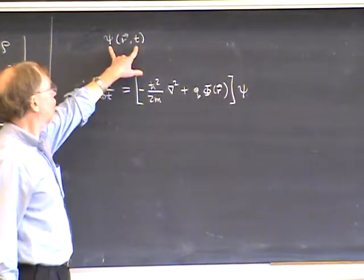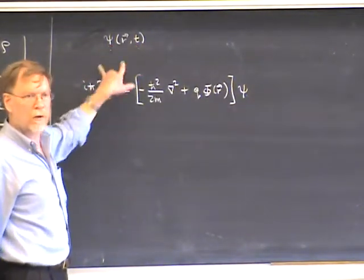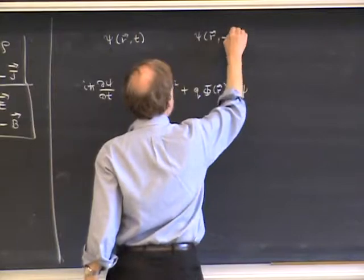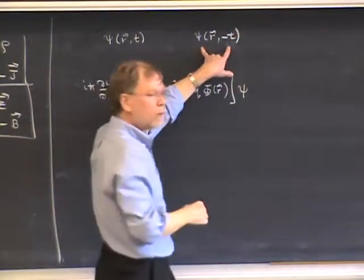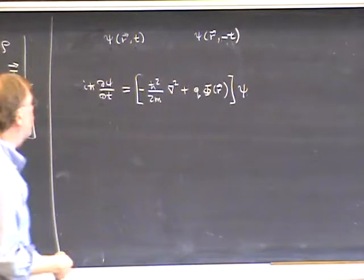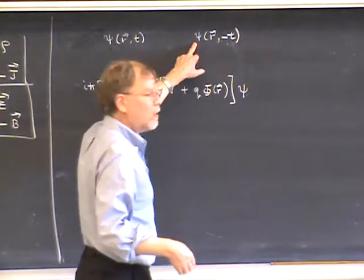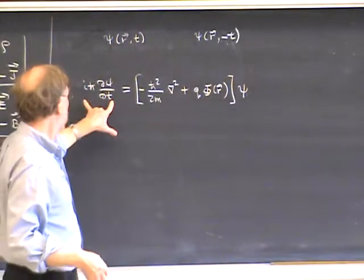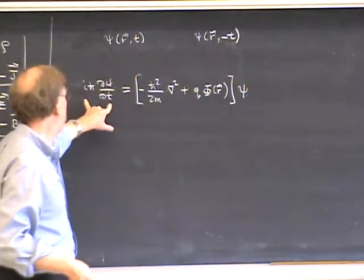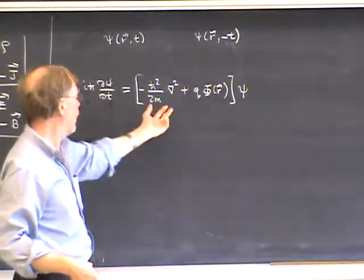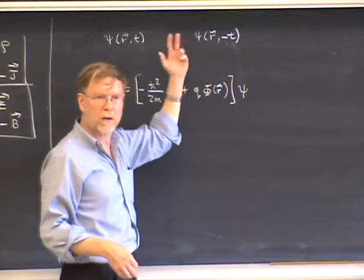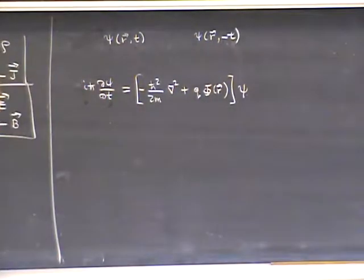Now, suppose that ψ(r, t) is a solution to this equation. The question we first want to ask is: if we just change the direction of time, is ψ(r, −t) also a solution? The answer in this case is no, unlike the classical case, because the Schrödinger equation is first order in time, not second order. If we just change the sign of time, the left-hand side changes sign but the right-hand side does not. So with this definition of a time-reversed state, it is not a solution to the original Schrödinger equation.